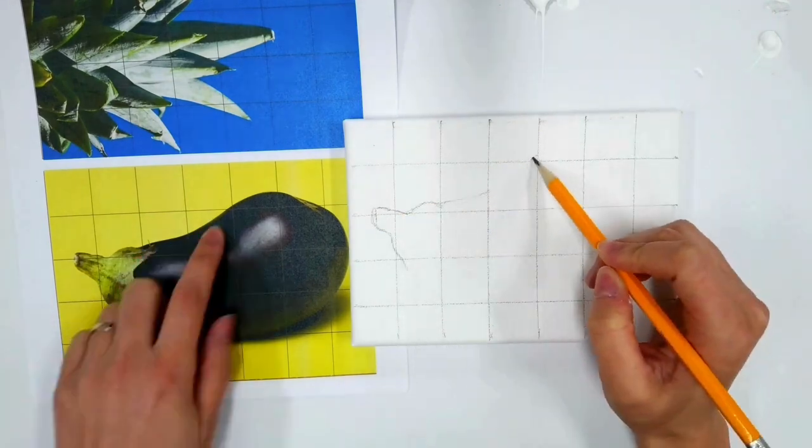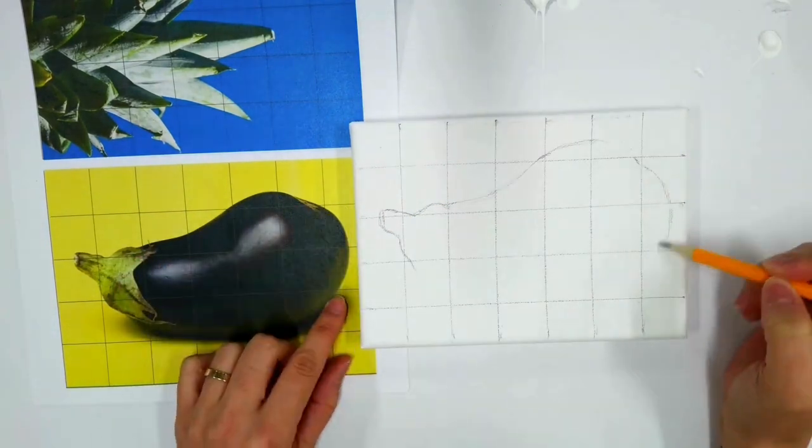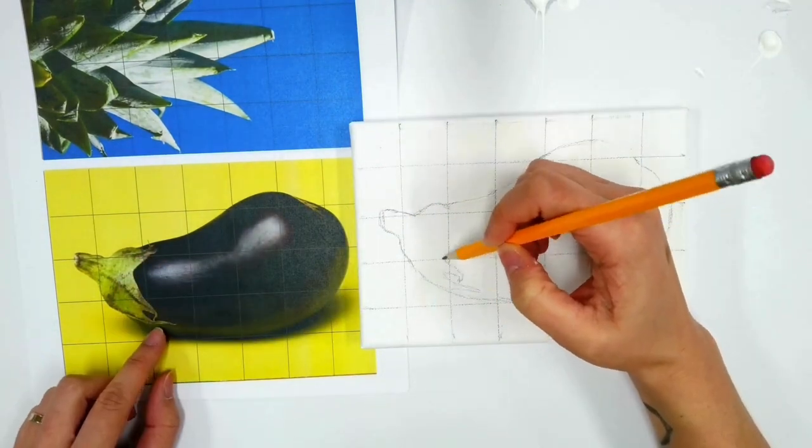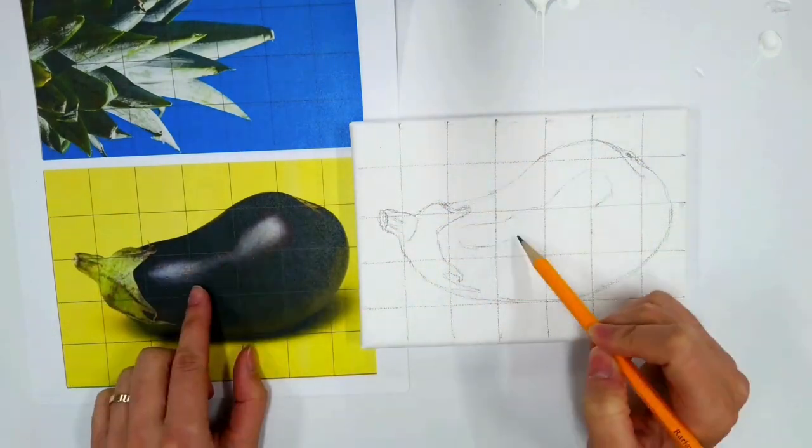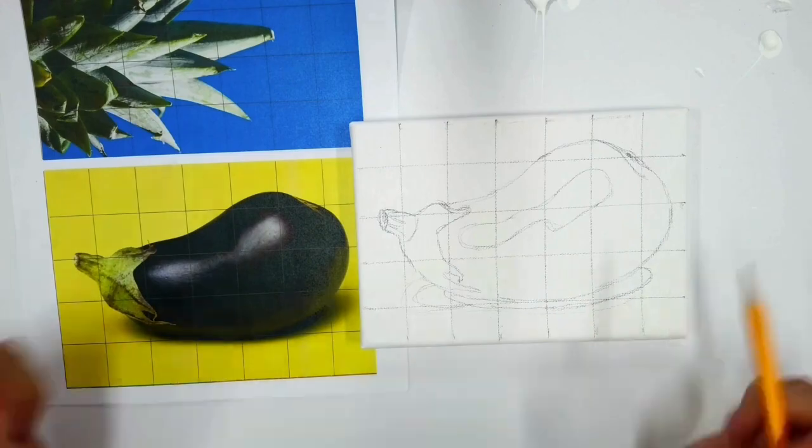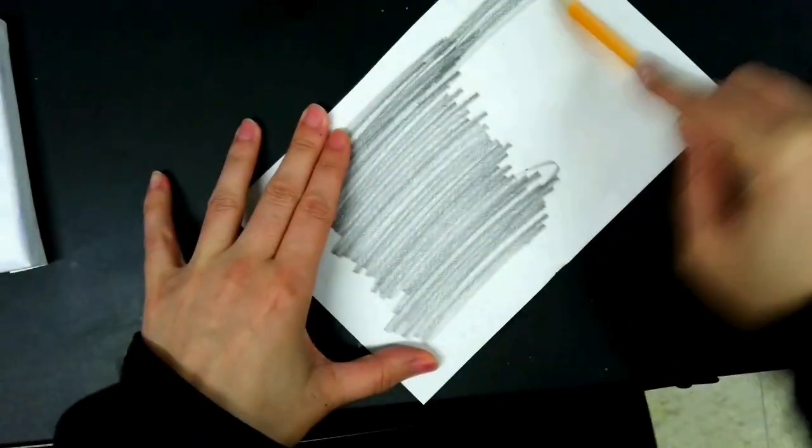Once that's done, I'm going into each box and drawing my eggplant according to each box that I'm pointing to, making sure to get all the details—the outlines, the shadows, the highlights.